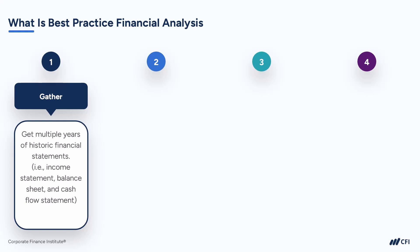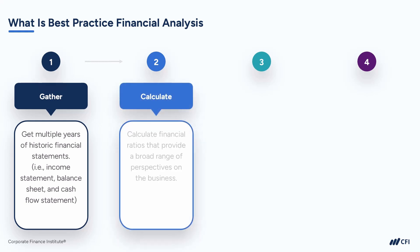Once you've collected the financial statements, it's time to calculate financial ratios. Financial ratios are powerful tools that allow you to assess a company's performance and compare it to the industry. Some commonly used ratios include liquidity ratios, profitability ratios, and solvency ratios. By calculating these ratios, you can gain insights into the company's liquidity, profitability, efficiency, and overall financial stability.